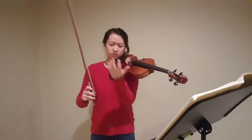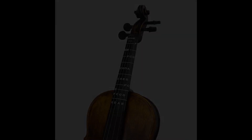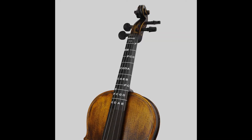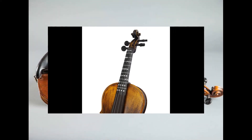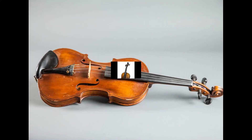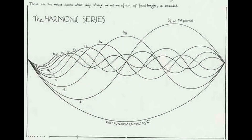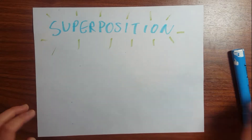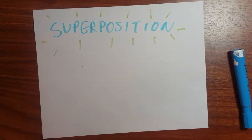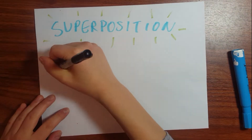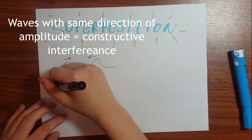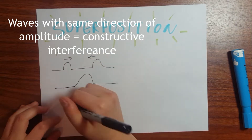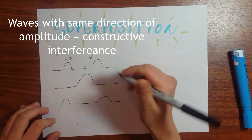One of the hardest things about playing the violin is this constantly changing space in between the notes without any frets to guide you. This is all due to something called the harmonic series. To understand the harmonic series, first we're going to cover this phenomenon called the superposition of traveling waves.